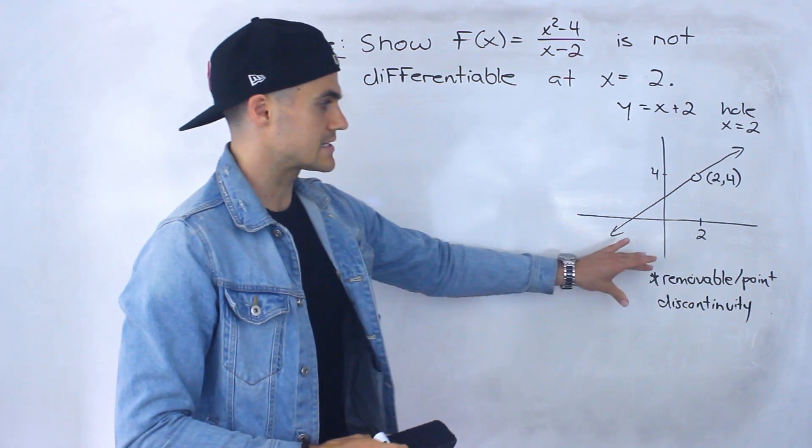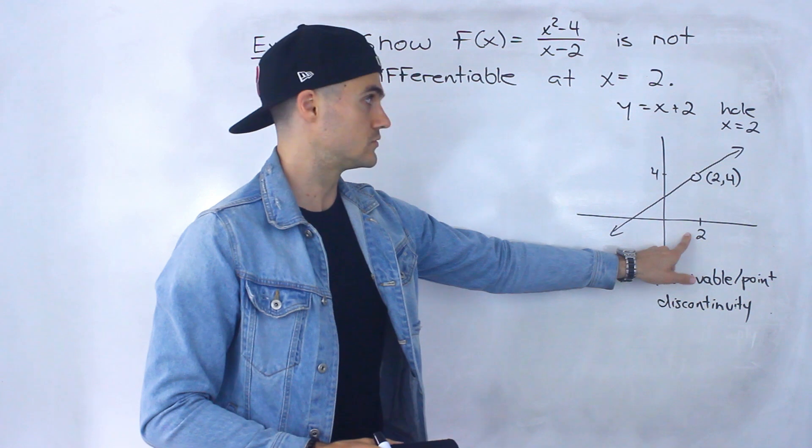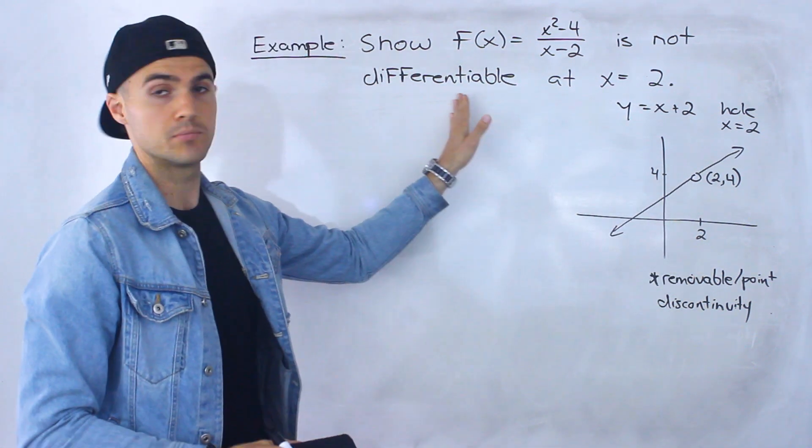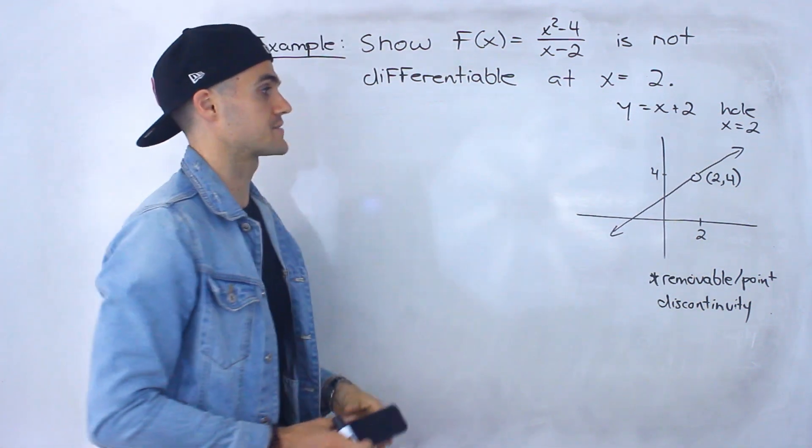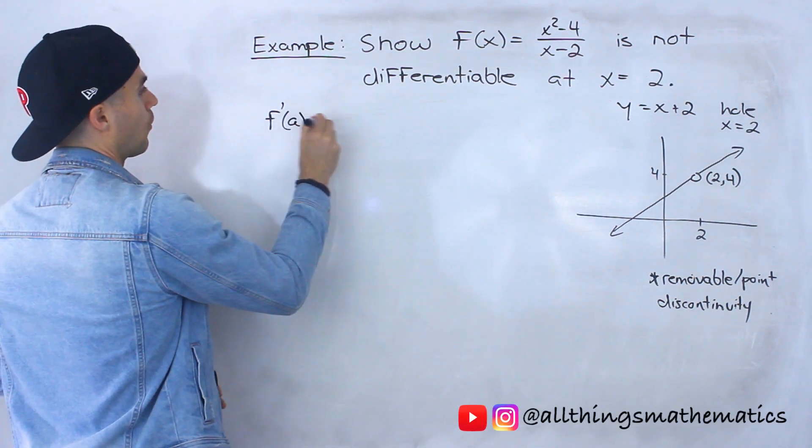Okay, so because it's discontinuous at this x value of 2 it's kind of obvious that it's not going to be differentiable at this x value of 2. But if we were to show it with more work, we would write out the derivative or the definition of a derivative.